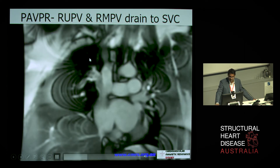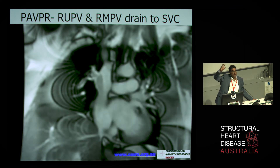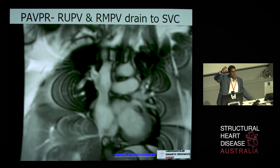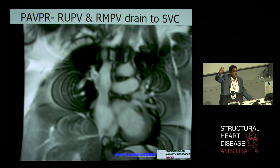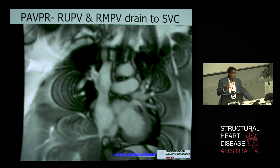What we actually find is that when we image this person, there are anomalous veins — most of the right middle and upper pulmonary veins are all coming into the SVC and explain that shunt. That's where the additional flow has come from, occurring about three centimetres above the SVC-RA junction. Really difficult to image any other way apart from this kind of cross-sectional imaging.